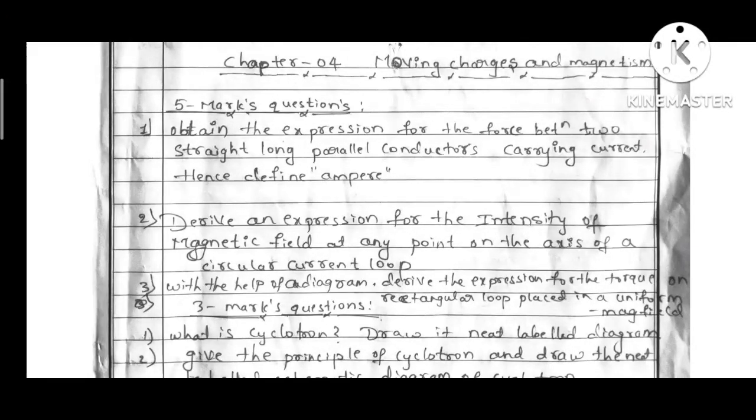First question is, obtain the expression for the force between two straight long parallel conductors carrying current, hence define 1 ampere. Now, the expression is F upon L is equal to mu0 I1 I2 divided by 2 pi R or 2 pi D. Derive the expression, 1 ampere current define the equation.